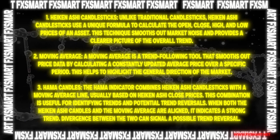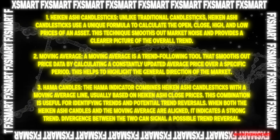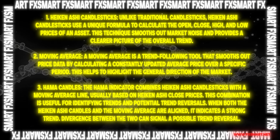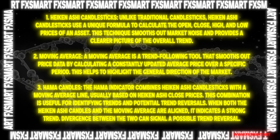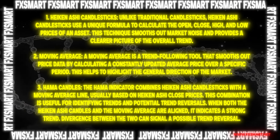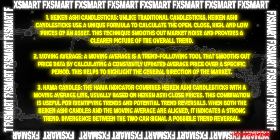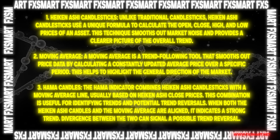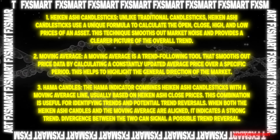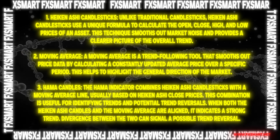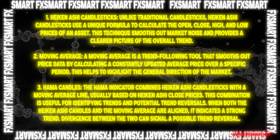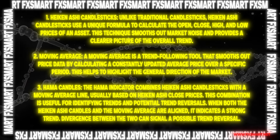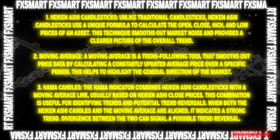Second, the moving average: a moving average is a trend-following tool that smooths out price data by calculating a constantly updated average price over a specific period, helping to highlight the general direction of the market. Third, HAMA candles: the HAMA indicator combines Heikin-Ashi candlesticks with the moving average line, usually based on Heikin-Ashi close prices. This combination is useful for identifying trends and potential trend reversals. When both the Heikin-Ashi candles and the moving average are aligned, it indicates a strong trend.